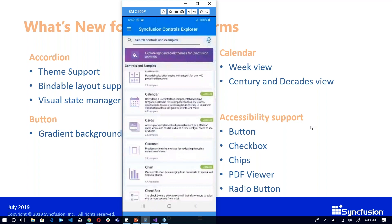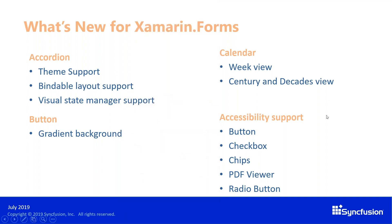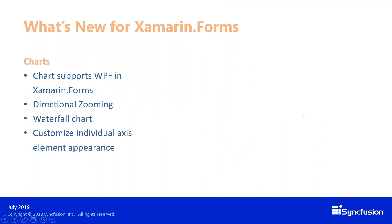We also have accessibility support for all the other controls. The next control I'd like to talk about is the chart control, and I'm really excited about its new support for the WPF platform in Xamarin Forms. Earlier we had support for Android, iOS, and UWP — now we support WPF in Xamarin Forms. The chart also has enhancements like directional zooming, which zooms horizontally or vertically based on pinch gesture direction, and chart now supports a waterfall chart type.